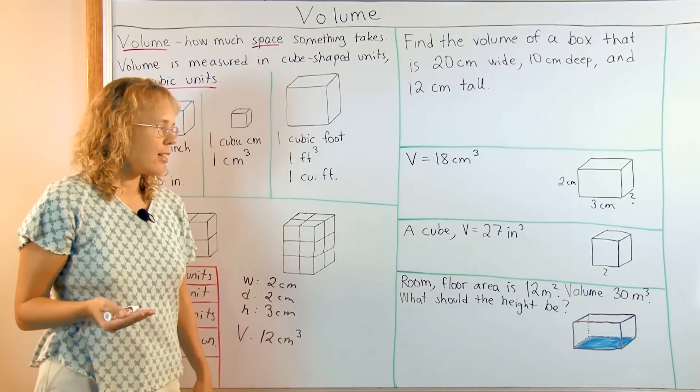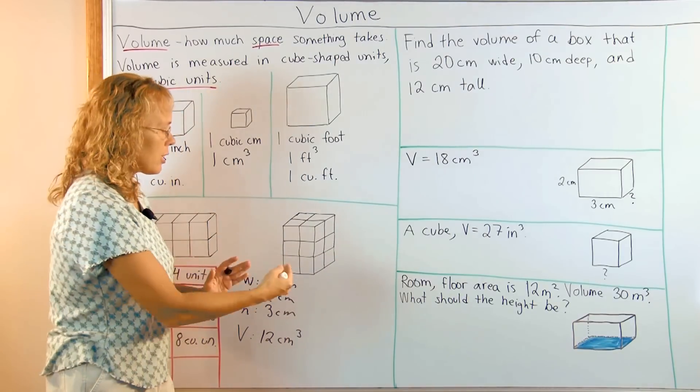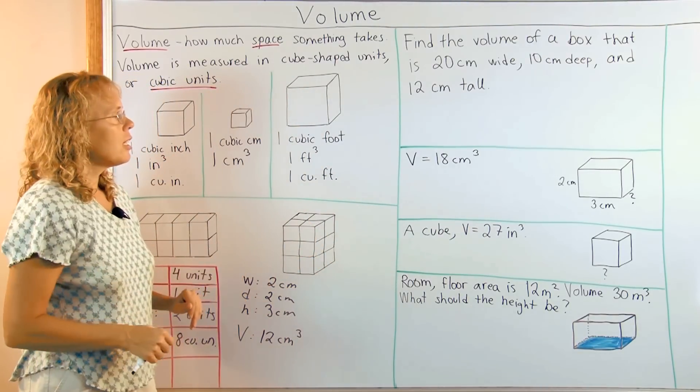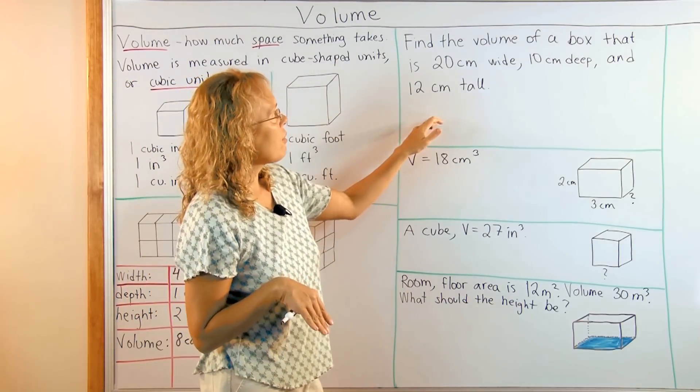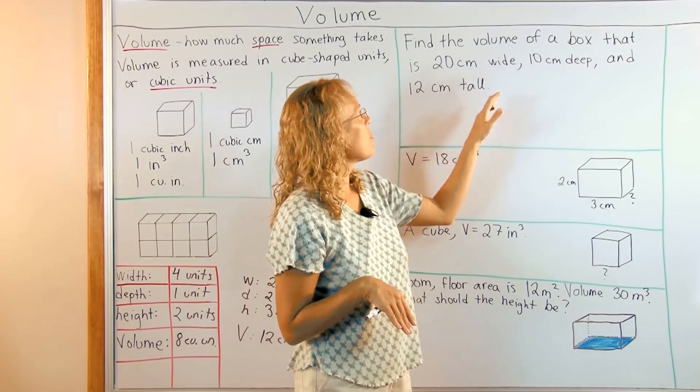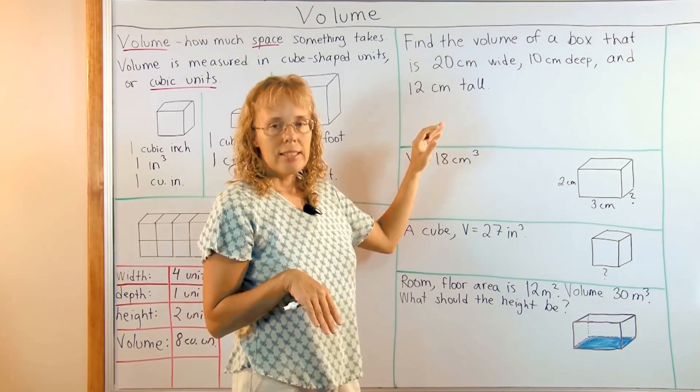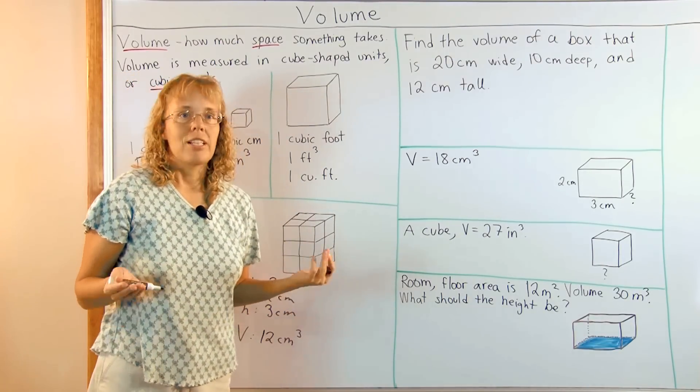After children understand this idea how to calculate the volume by multiplication and how it consists of these individual little blocks, then they are ready for other word problems. Here's one. Find the volume of a box that is twenty centimeters wide, ten centimeters deep and twelve centimeters tall. This is exactly the same situation as I have here. We simply need to multiply those three numbers.